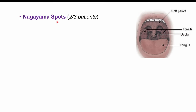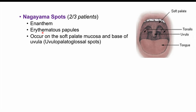We can also see Nagayama spots, occurring in roughly two-thirds of patients. These are the enanthem — dermatological manifestations that occur internally, visible inside the mouth or oral cavity. They are erythematous papules (reddened raised lesions less than 10mm in diameter) found on the soft palate and at the base of the uvula. These are also known as uvulopalatoglossal spots.